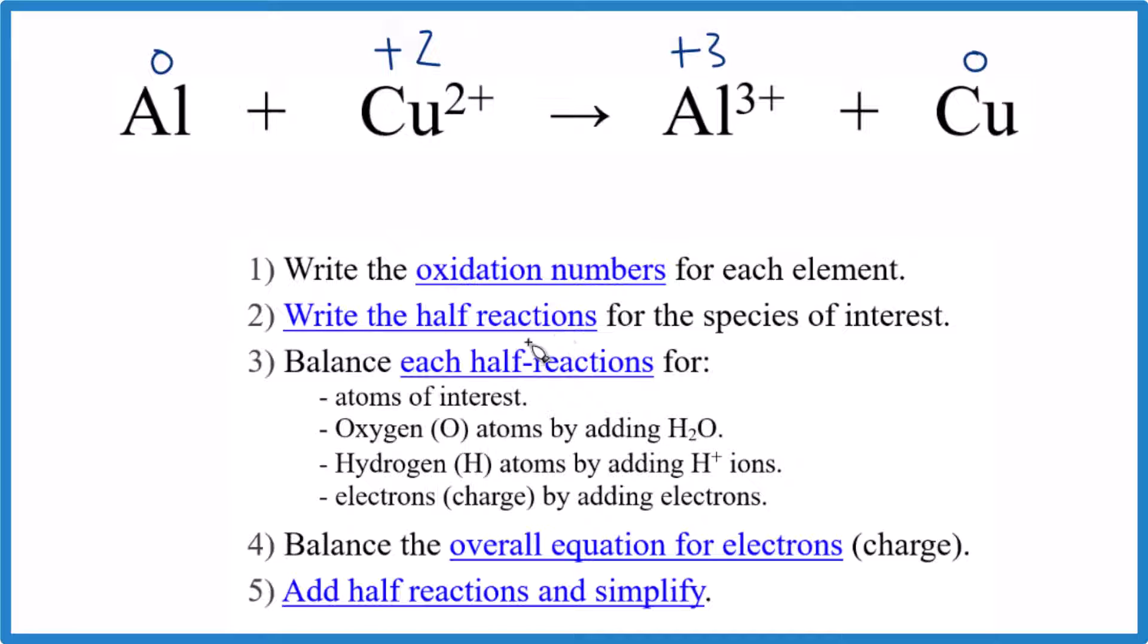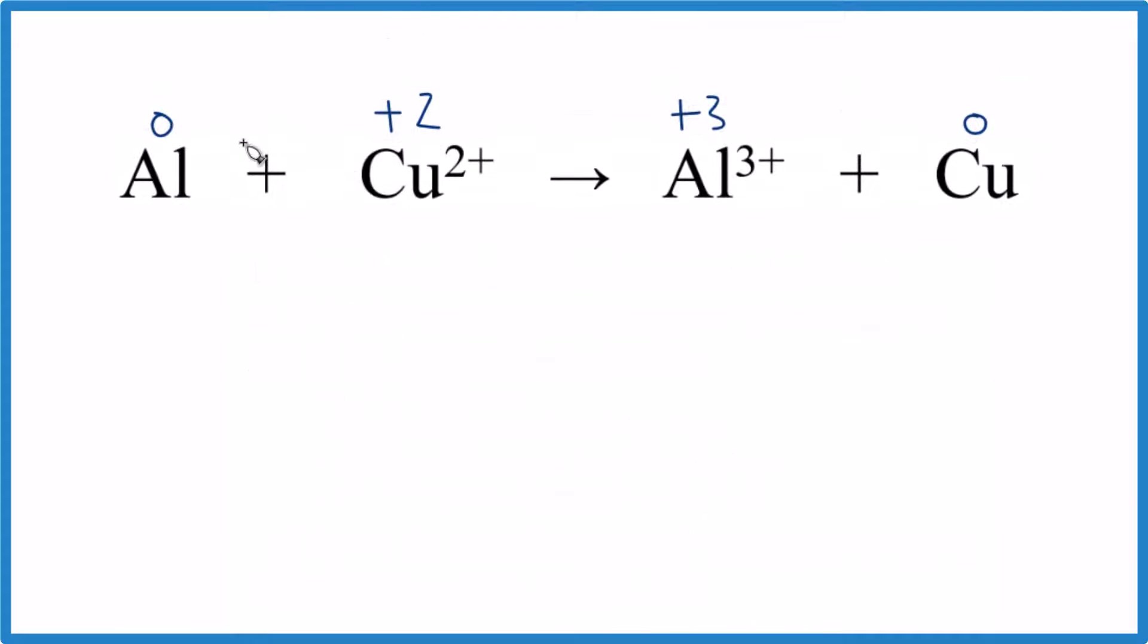Next, we're going to write the half reaction. I can see the aluminum goes from zero to plus three, the copper plus two to zero. For me, it's easier just to look at what's reduced first. Plus two to zero, that got smaller. That's the reduction half reaction. That means up here we have oxidation. The number got bigger there.